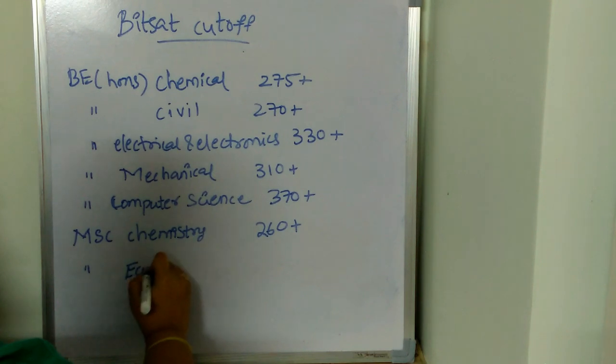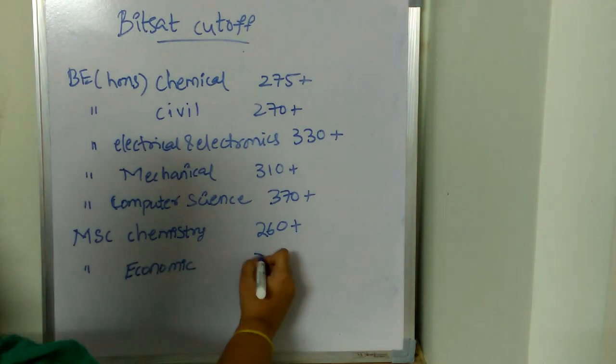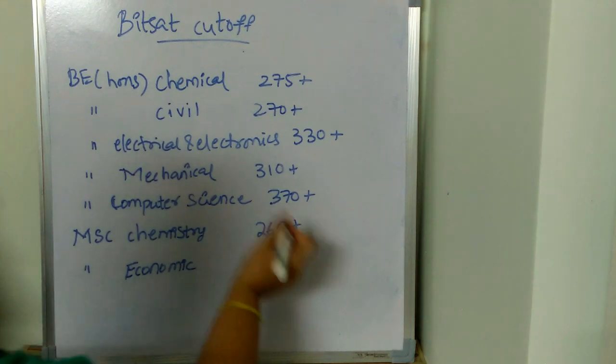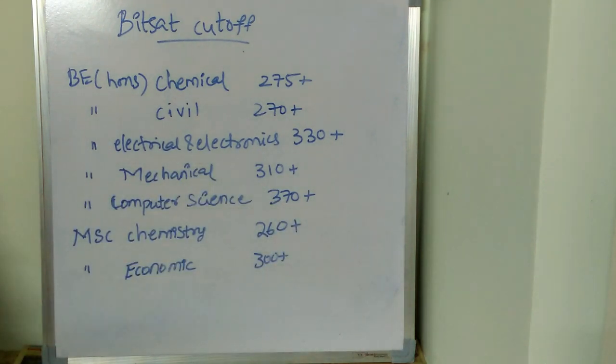MSc Economics cutoff is going to be above 300. This is just an expected cutoff. Exact cutoff will be based upon many things.